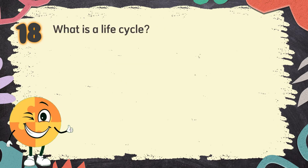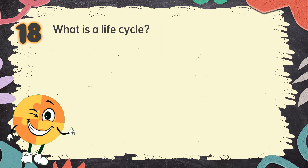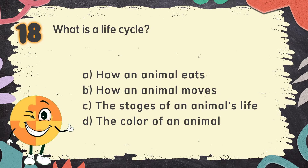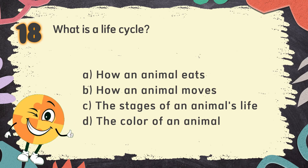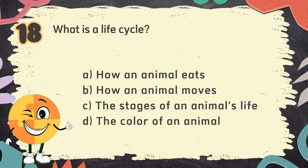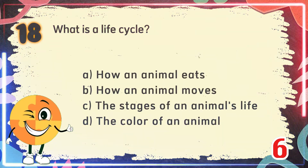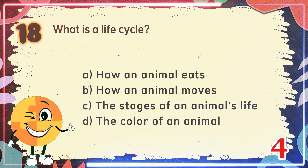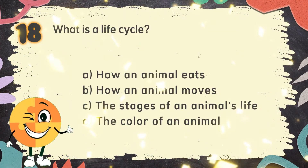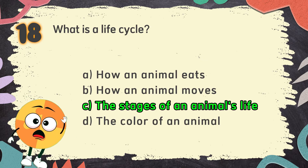Number 18: What is a life cycle? The choices are: A. How an animal eats, B. How an animal moves, C. The stages of an animal's life, D. The color of an animal. The correct answer is C. The stages of an animal's life.